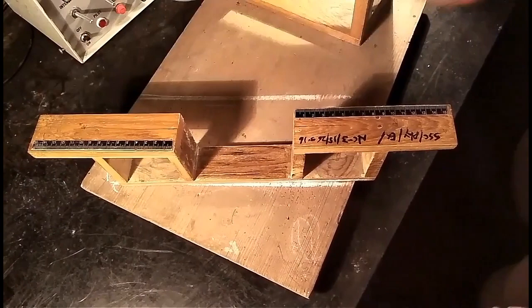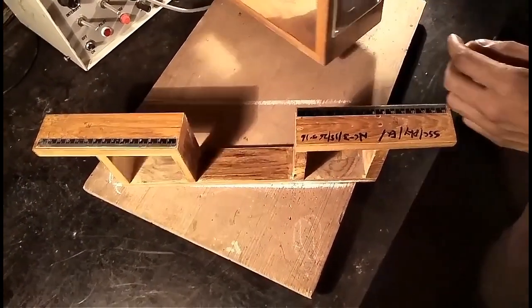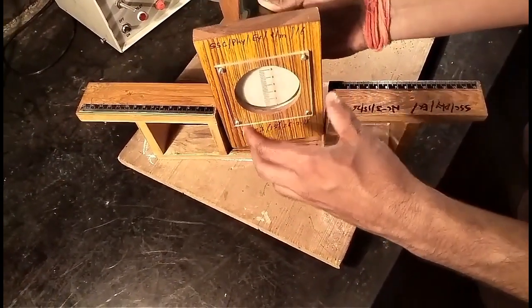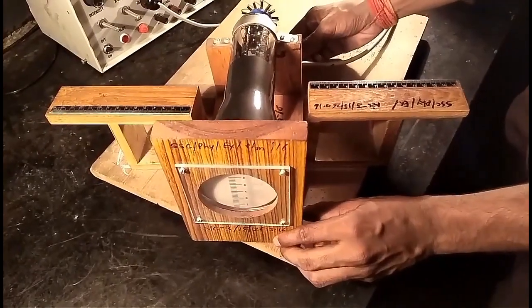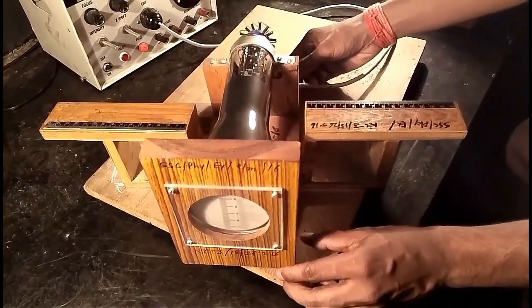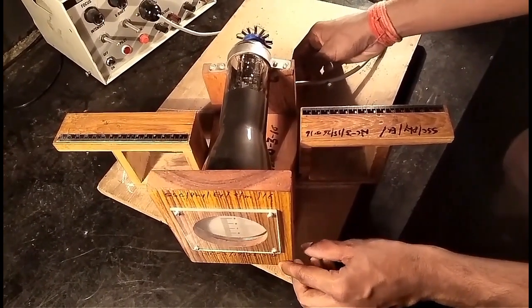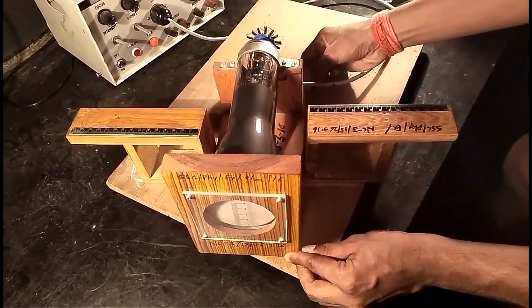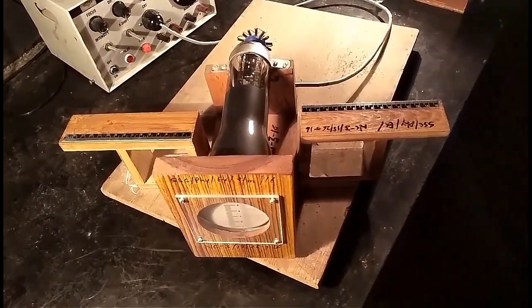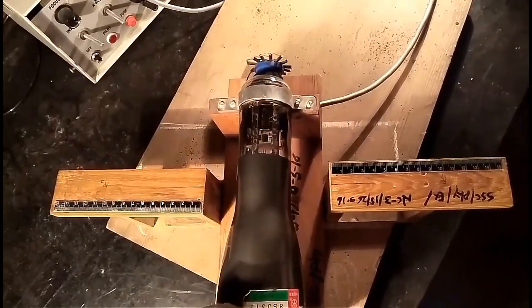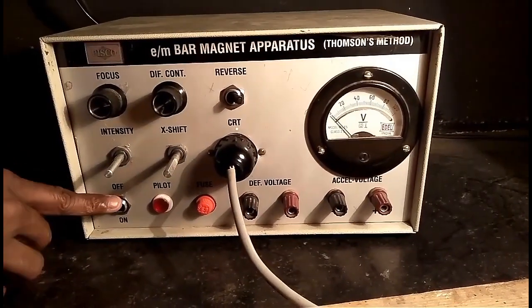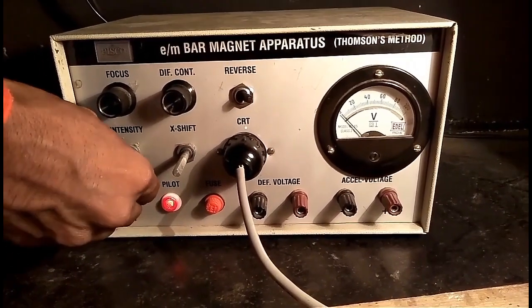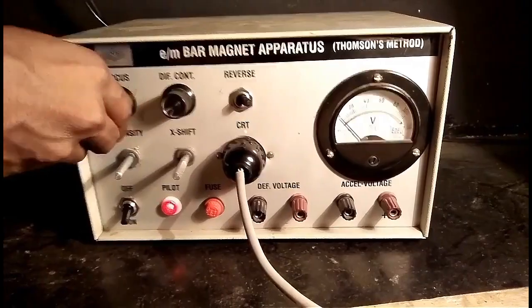In the second part, first we place the cathode ray tube on wooden box so that 0 degree to 0 degree position of dial is perpendicular to the length of CRT. In this position, CRT is aligned along the north-south direction while scales are attached perpendicular to cathode ray tube, that is east-west. We switch on the power supply and adjust the intensity and focus control to obtain a sharp spot on CRT screen.